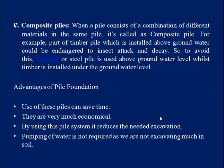Composite piles are a combination of two different materials such as steel and concrete, or wooden and concrete. When a pile consists of a combination of different materials in the same pile, it is called a composite pile. For example, the part of a timber pile installed above groundwater could be endangered by insect attack and decay, so concrete or steel piles are used above groundwater level, while timber is installed below the groundwater level.